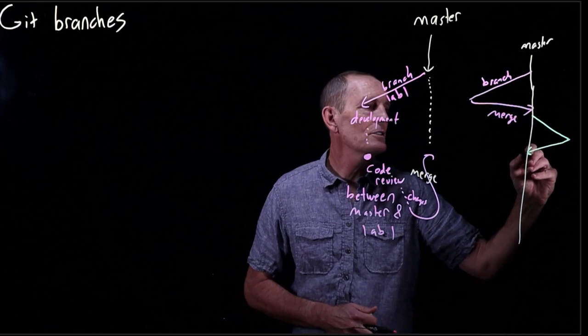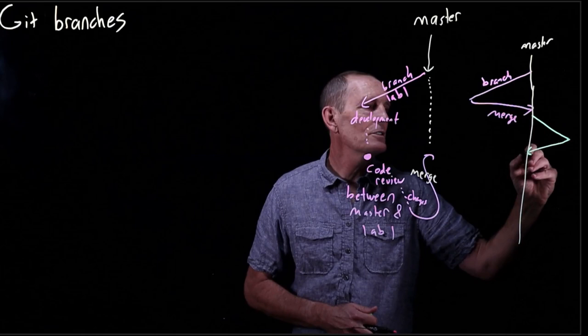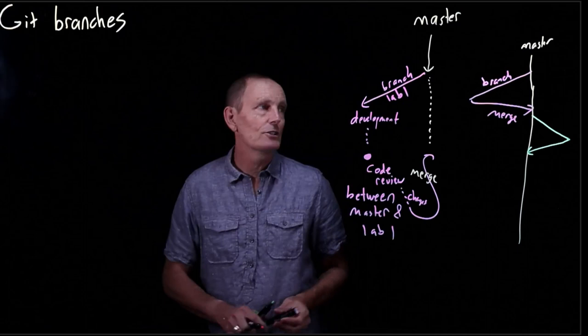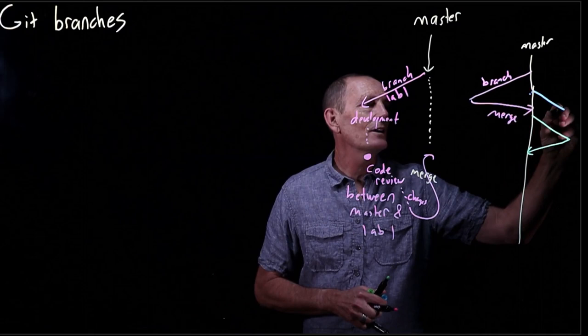So we might have a branch here and then it gets merged back in. Or we might have, and this is very common, overlapping branches. So we might have a branch here comes out and then let's say merges in perhaps here.